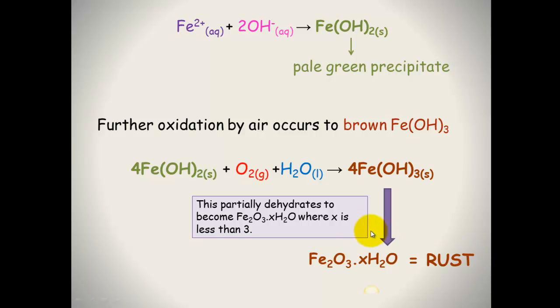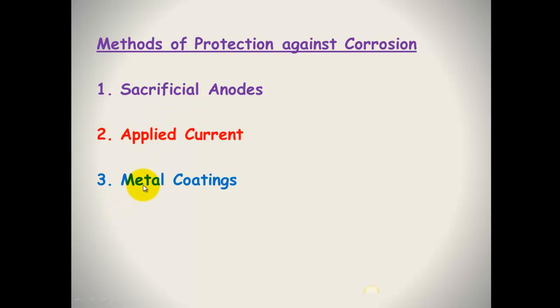We want to prevent these reactions from occurring. We have very expensive structures like bridges, pipes, and boats that we don't want to rust. There are several different methods that we can use to protect against iron corrosion: sacrificial anodes, applied current, metal coatings, paint and plastic, and alloying. I am going to describe each of these in detail.